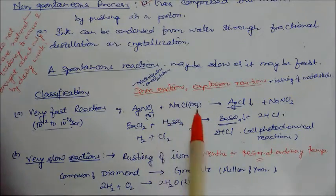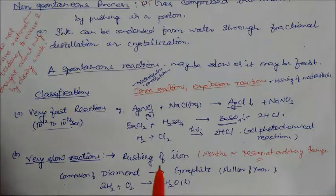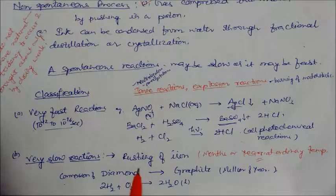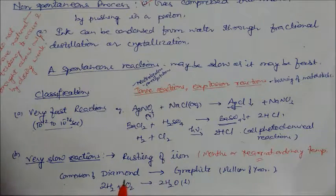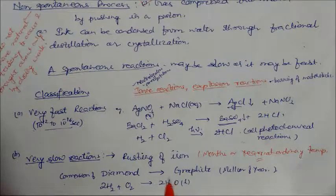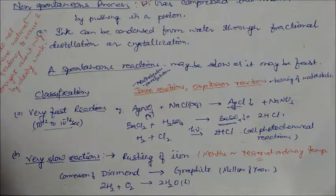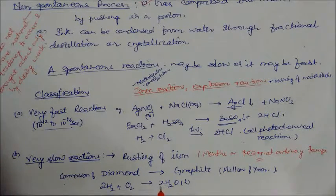Burning of matchsticks is also a very fast reaction. Very slow reactions include rusting of iron, which takes months or years at ordinary temperature — but it is still spontaneous because it occurs automatically. Conversion of diamond to graphite takes millions of years. Hydrogen reacting with oxygen at ordinary conditions to form water is also spontaneous but takes millions of years.